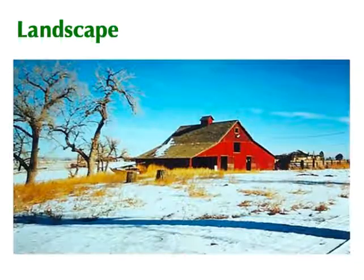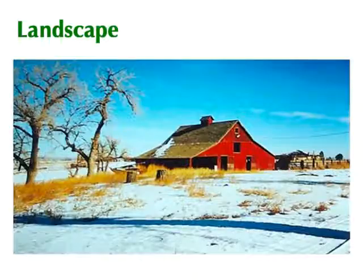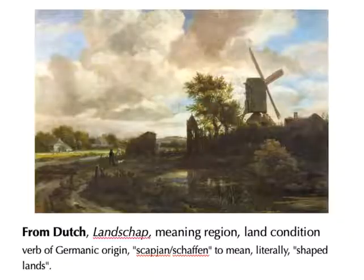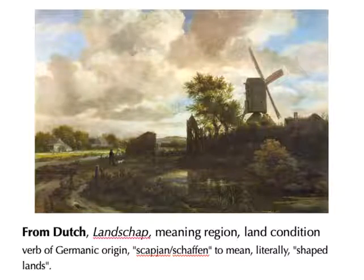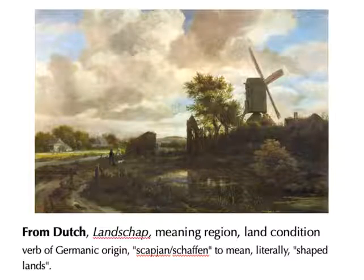In this slide presentation, we're going to take a quick look at what a landscape is. The word landscape actually comes from the Dutch — Middle Dutch specifically — 'landshop.' The '-schap' or '-skap' also comes from a verb of Germanic origin, 'skapken schaffen,' which means literally 'shaped lands.'